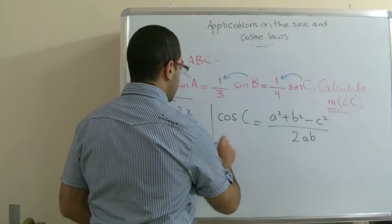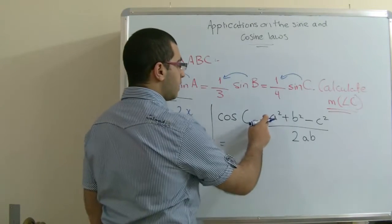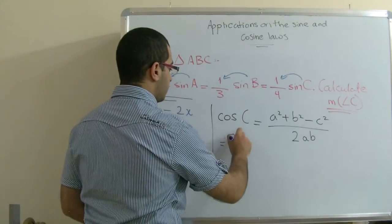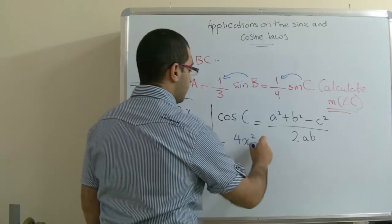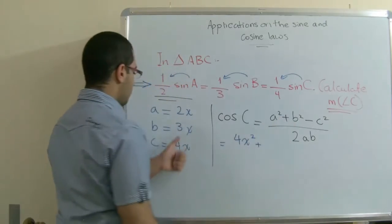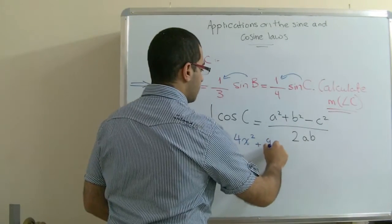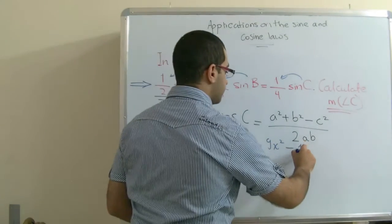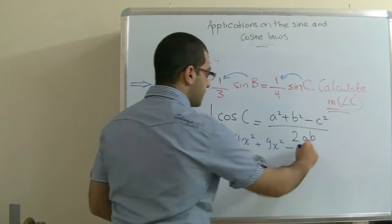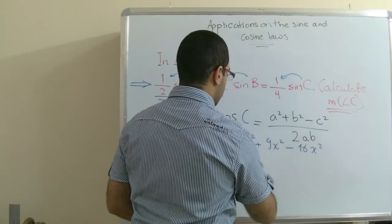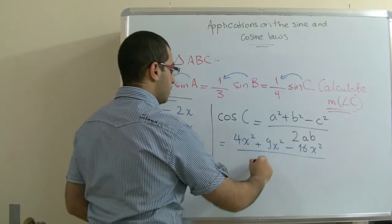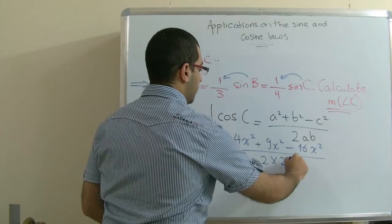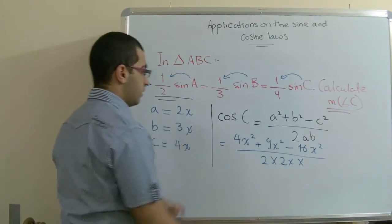So this will equal A squared. Here we have 2x, so it will be 4x squared, positive B squared, which will be 9x squared, negative C squared, which will be 16x squared, over 2 by A, which is 2x, by B, which is 3x.